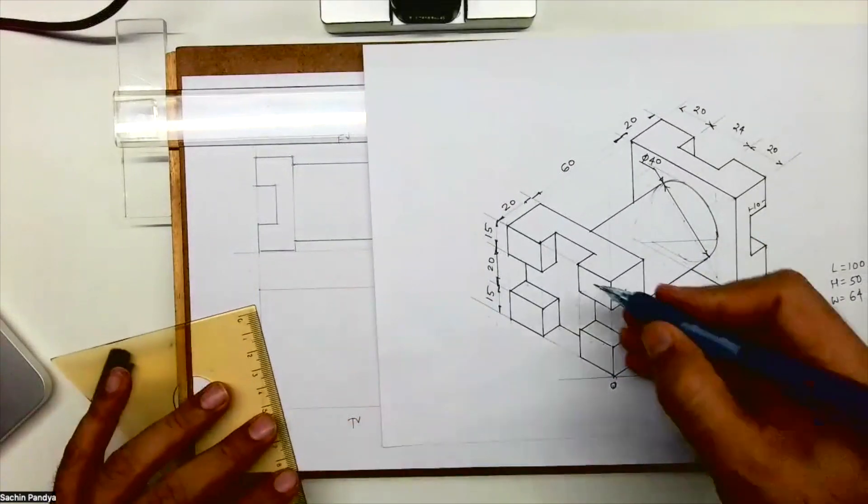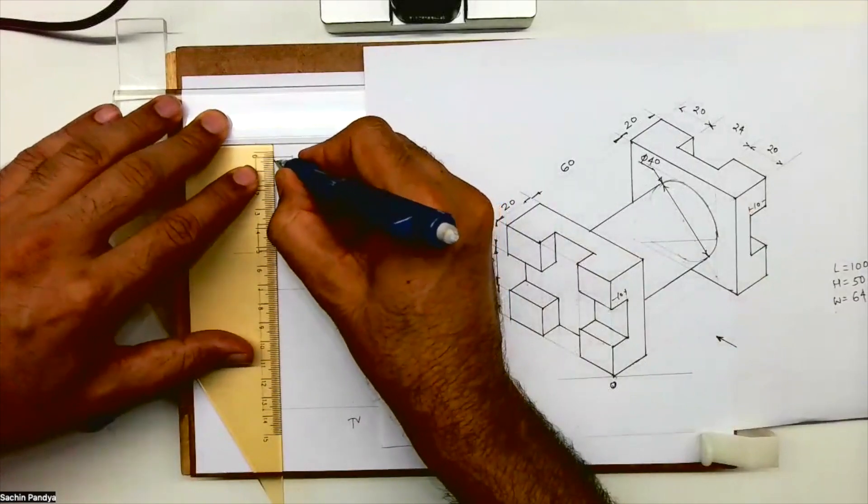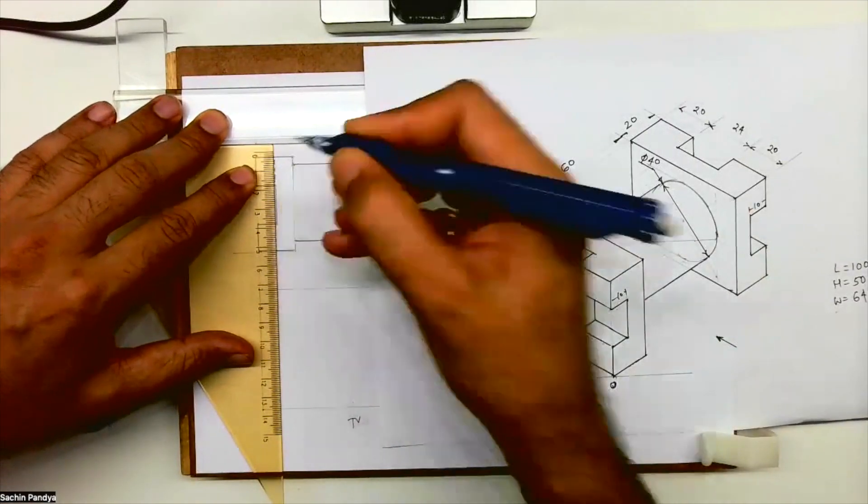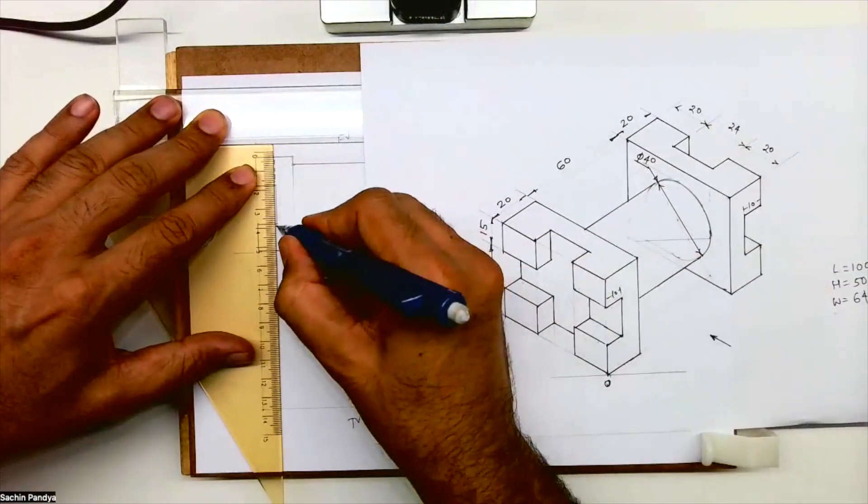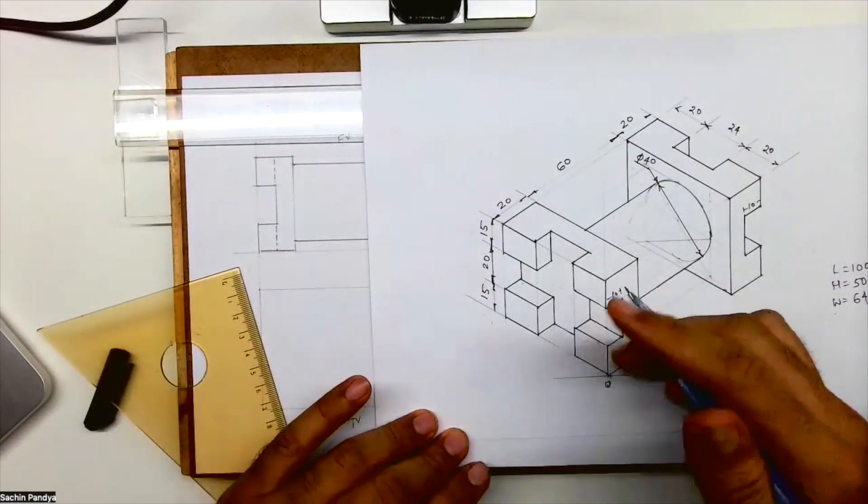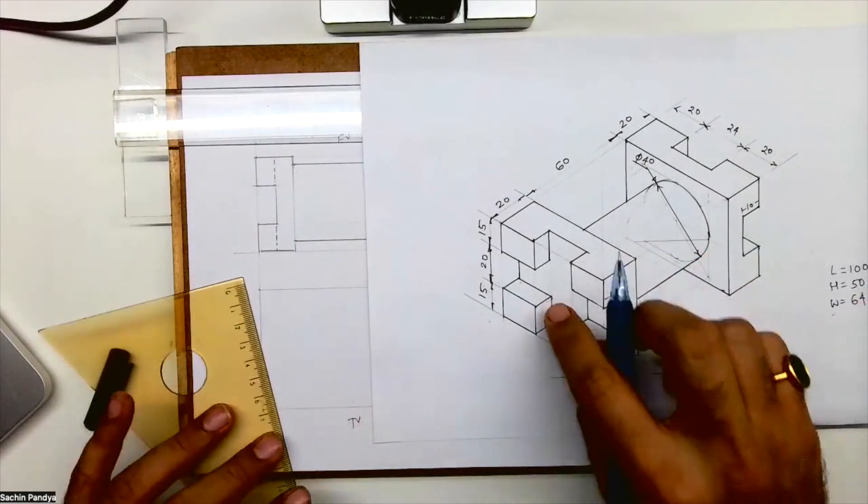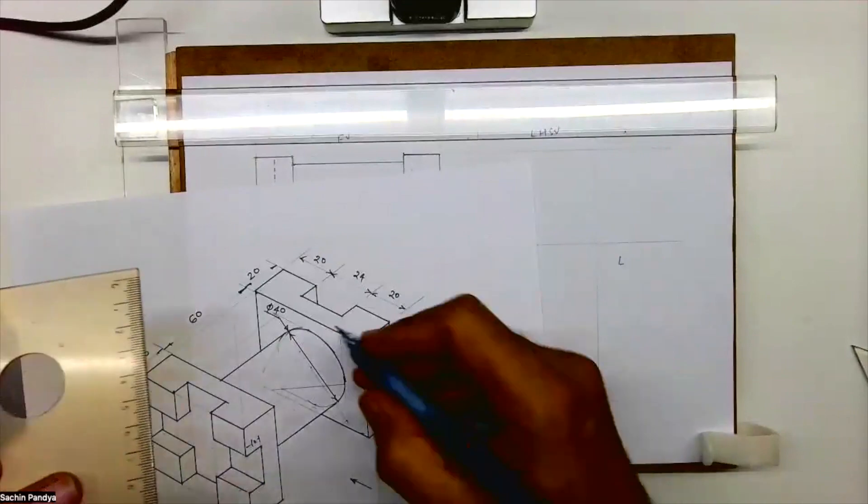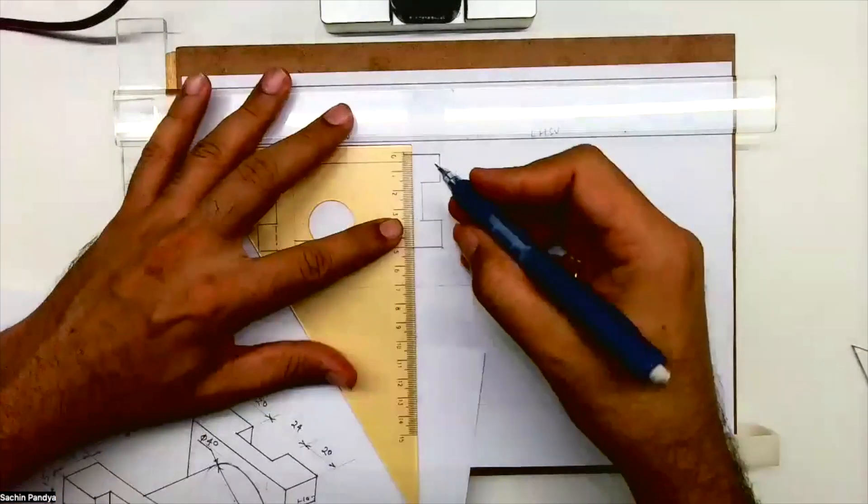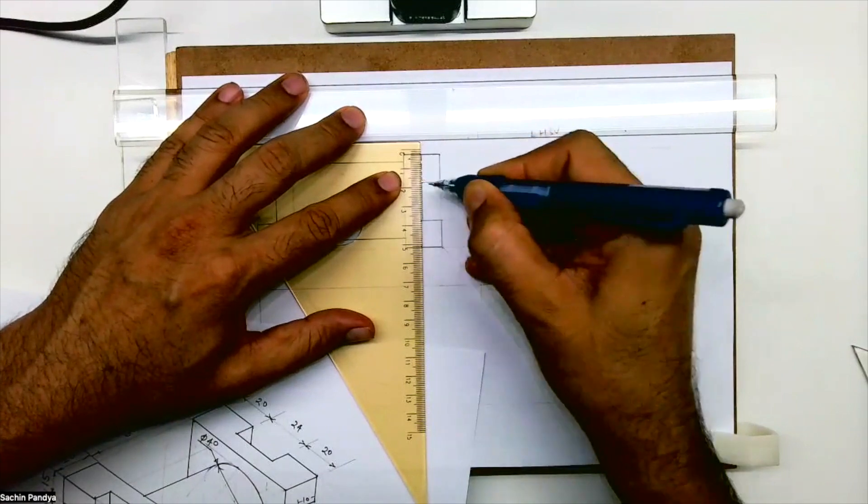Now let's see dotted lines. This part you can't see when you see from here, so that part will be dotted. The edge which you can't see needs to be drawn dotted, same on the other side.